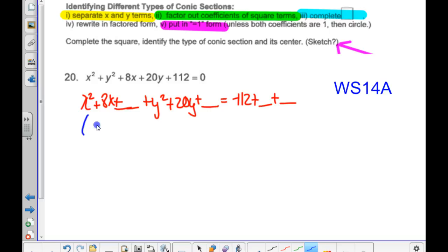Zachary, what do we get for this first part? 8X plus 16. Okay. Then 21 plus 100. So no coefficients, so we just have a 16 and 100 over here. And then X plus 4 squared. That seems right to me.